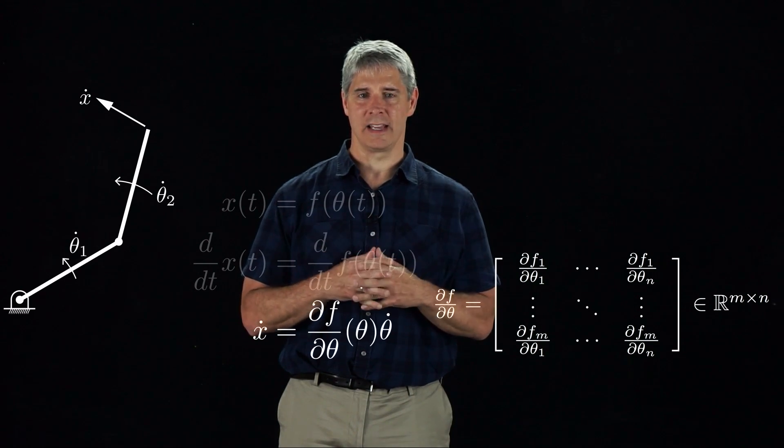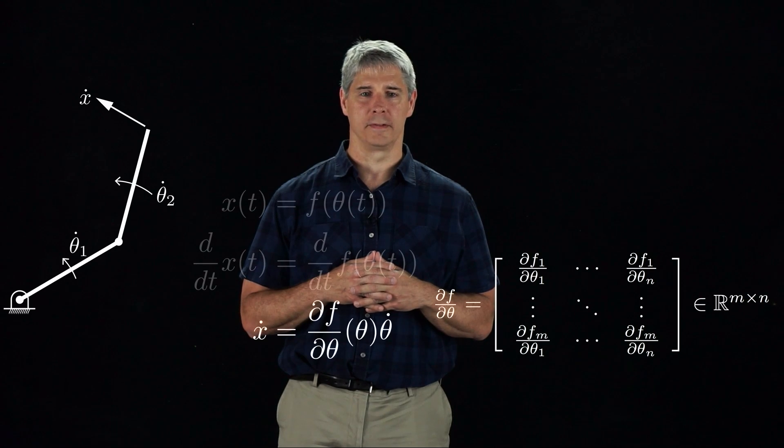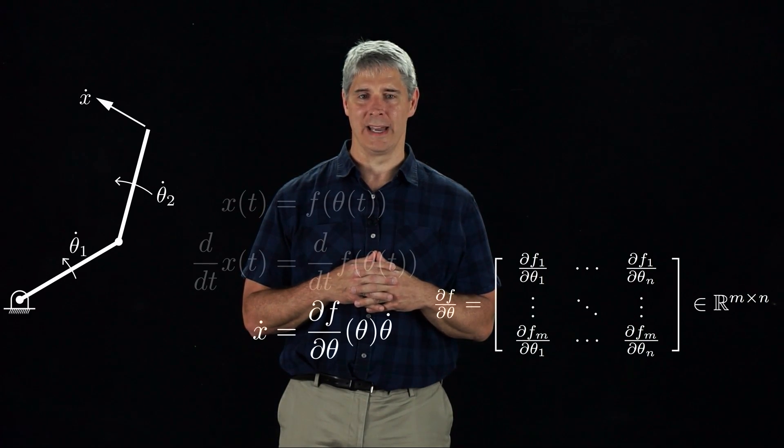Because x has m coordinates and the joint vector theta has n coordinates, the matrix of partial derivatives, df d theta, is m by n.